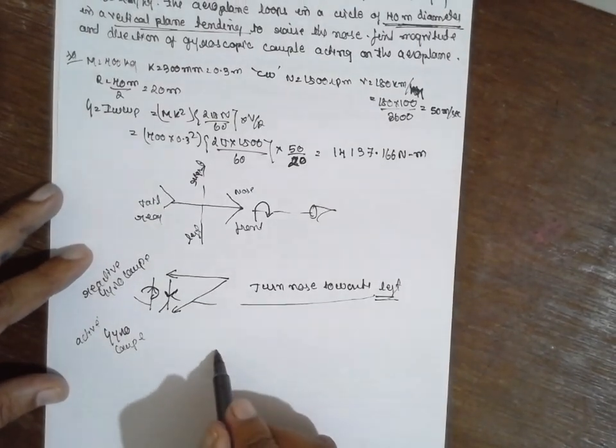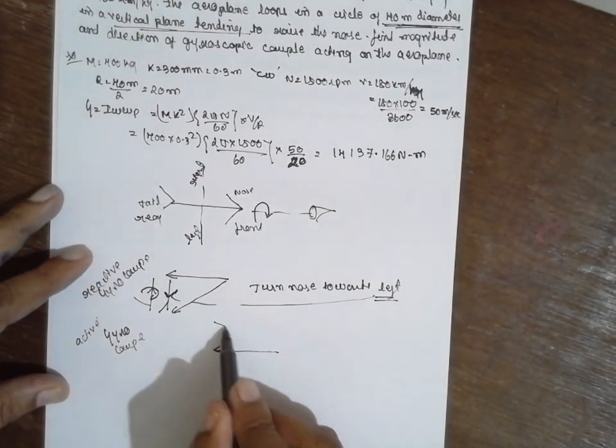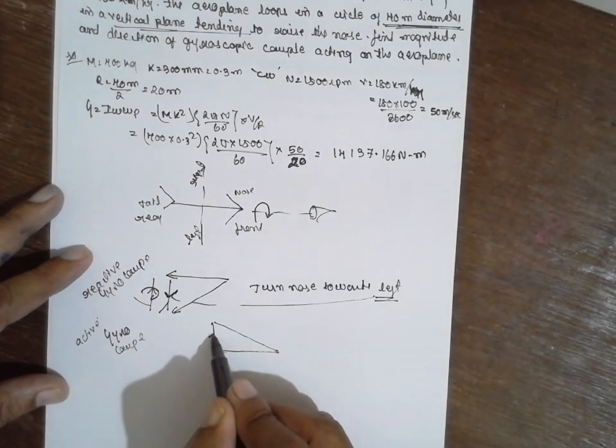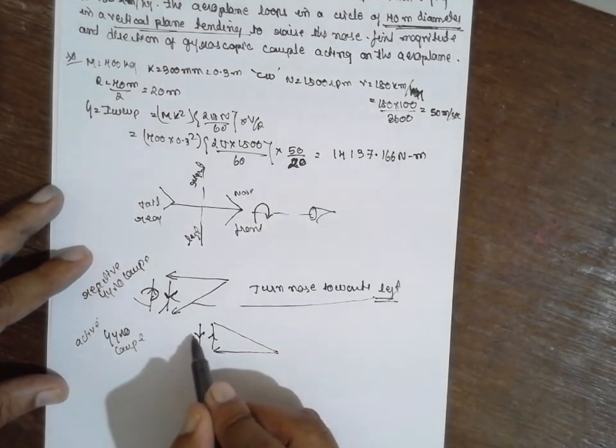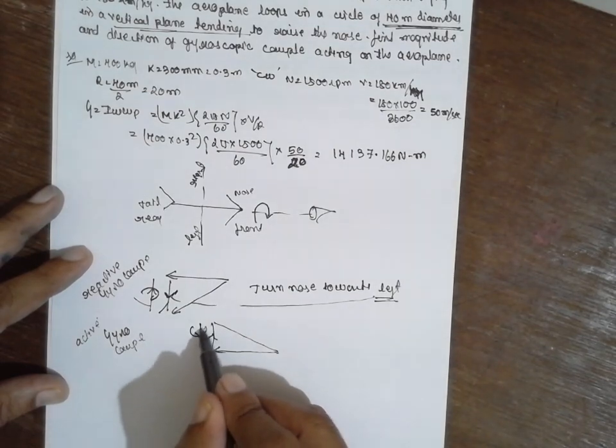And next position, next possibility. The same, it moves upward. This will be active gyroscope. This will be reactive gyroscope. Based on this one you have to draw the, you have to hold pen in this way.